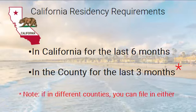However, if you and your spouse have lived in California for at least six months but in different counties for the last three months, you can file in either county.